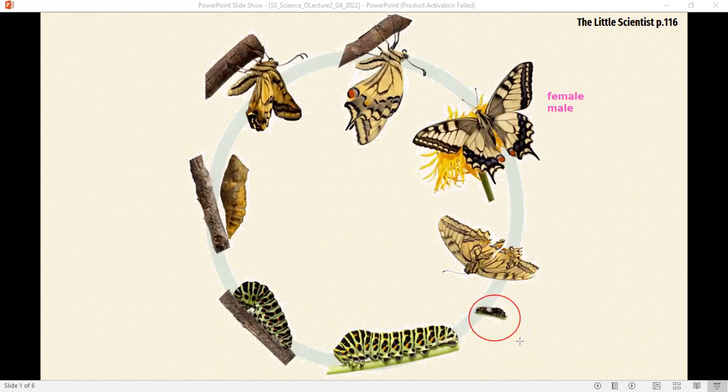During the larval stage, the insect is active. It feeds first on the shell of its egg, then on the leaves of plants. It is growing too fast and shedding, or going through molting.